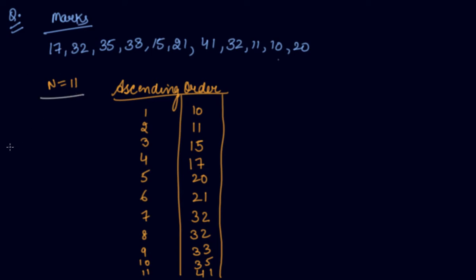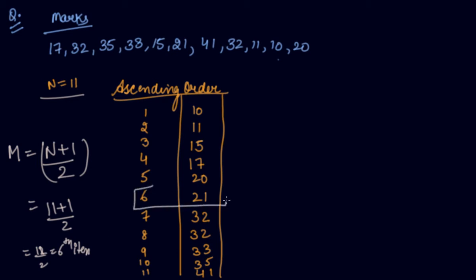Now, you have to find out the median value which is n plus 1 divided by 2 in case of odd series. So your n is 11 plus 1 divided by 2 is 12 divided by 2, it's the 6th item. So the 6th item is 21. So your median value is 21 marks which divides the series into 2 equal parts. So your median value is 21 marks.